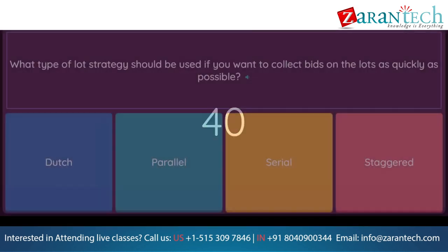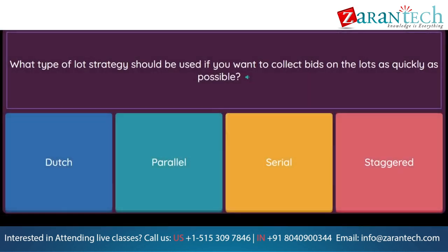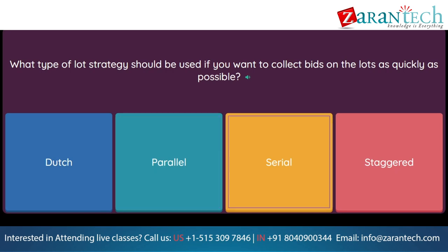Question: What type of lot strategy should be used if you want to collect bids on the lots as quickly as possible? Option 1: Dutch. Option 2: parallel. Option 3: serial. Option 4: staggered.